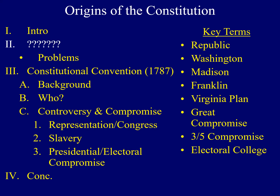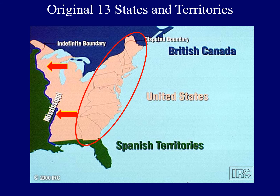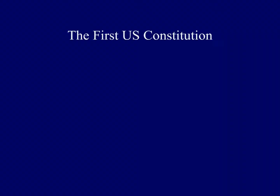I'd like to begin by talking about the first Constitution of the United States and some of its problems. This map identifies the land included in the original 13 states and territories at the end of the American Revolution. The area in pink on the right, the eastern seaboard, included the first 13 colonies that eventually became states. U.S. territory actually expanded all the way to the Mississippi River. In order to provide enough unity for those 13 colonies, they got together and developed the first Constitution of the United States. The name of that Constitution was the Articles of Confederation.